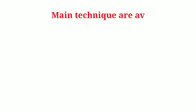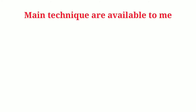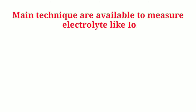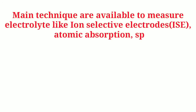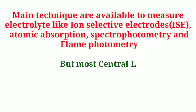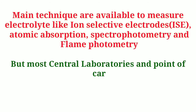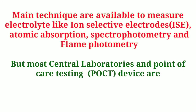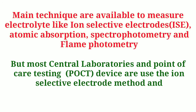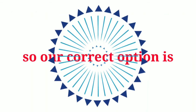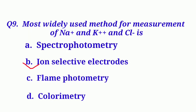Many techniques are available to measure electrolytes, like ion-selective electrodes (also called ISE), atomic absorption, spectrophotometry, and flame photometry. But most central laboratories and point-of-care testing (POCT) devices use the ion-selective electrode method, which is the most widely used. So our correct option is Option B: Ion-selective electrodes.